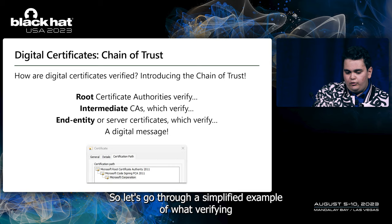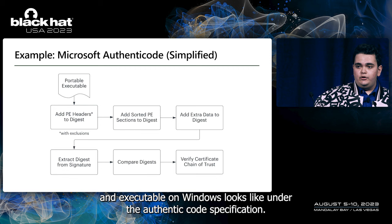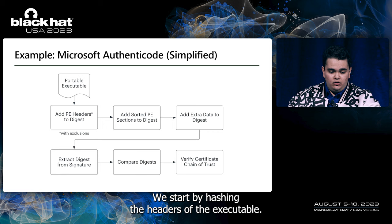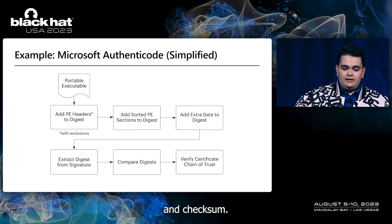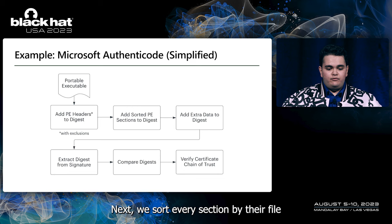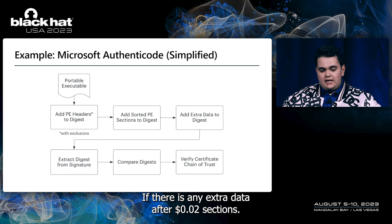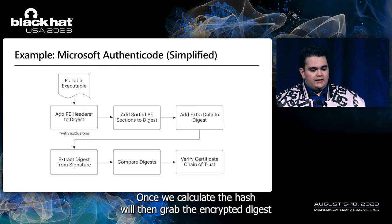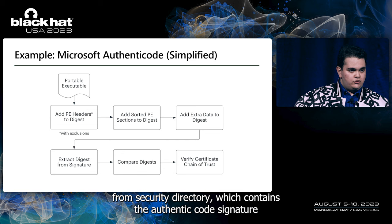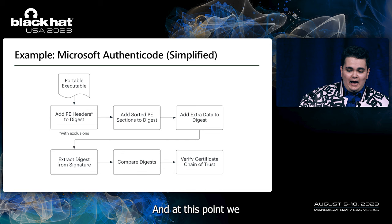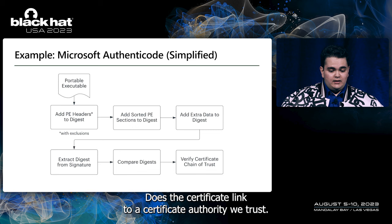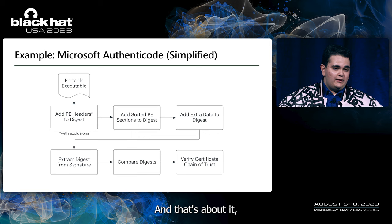So, let's go through a simplified example of what verifying an executable on Windows looks like under the Authenticode specification. First, we need to generate an Authenticode hash or digest. We start by hashing the PE headers of the executable, skipping over some parts of the header including the security directory and the checksum. Next, we sort every PE section by their file offset in ascending order and hash their contents. If there is any extra data after the PE sections and before the security directory, we'll include this into the hash as well. Once we calculate the hash, we'll grab the encrypted digest from the security directory, which contains the Authenticode signature. We decrypt and compare this hash with the one we calculated. Then we verify the certificate and the chain of trust — does the certificate link to a certificate authority we trust?